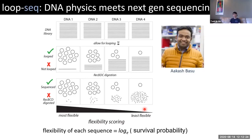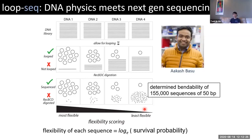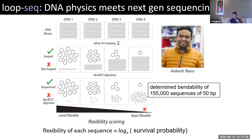Akash has done this for many different sequences. Currently he has data from over 250,000 different sequences of 50 base pair length, giving us enough data to really get at the mechanical code of the genome.